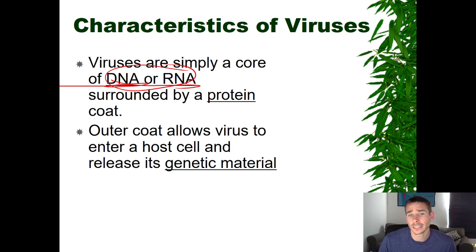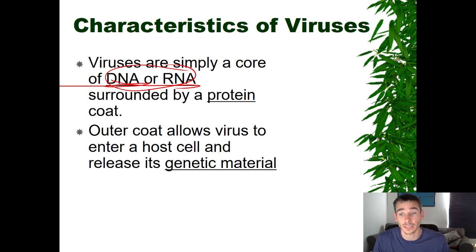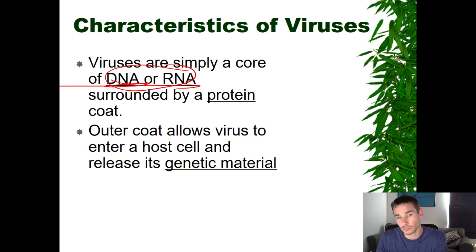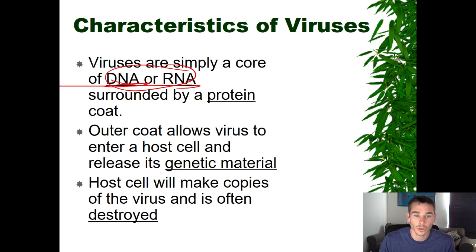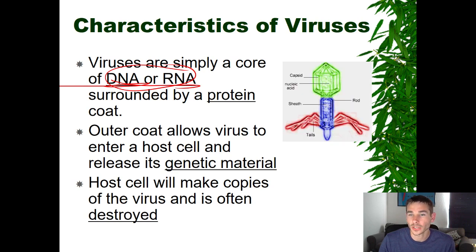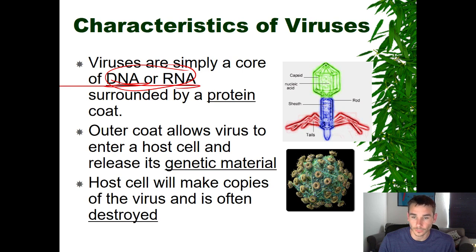A virus works by releasing its genetic code into another cell. A virus is not a cell itself — and remember, one of our characteristics of living things is being made of cells — so it doesn't meet that characteristic. What it does is hijack a cell and use that cell to reproduce, which does meet another characteristic of life, even though the virus itself is not a cell. The host cell makes copies of the virus, and oftentimes the cell is destroyed afterward. That's a picture of a basic virus structure — not all viruses look like that, but it's a general common structure.